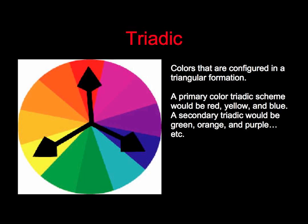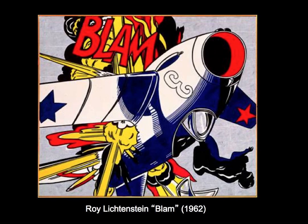A triadic color scheme uses three colors that are usually equidistant from each other around the color wheel. Roy Lichtenstein used the triadic color scheme a lot, with the addition of white and black, in his pop art comic book-like paintings. These are quite large paintings, about four by four feet, and are like a blown-up comic strip — so if you get close you can see the halftone dots you would have gotten in a close-up of a 1960s-era comic book from the printing process.